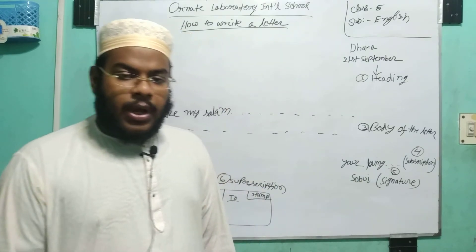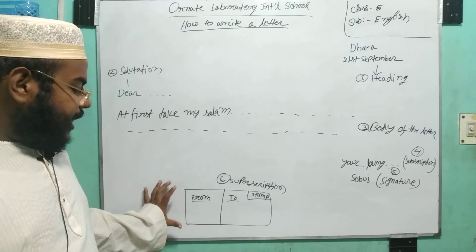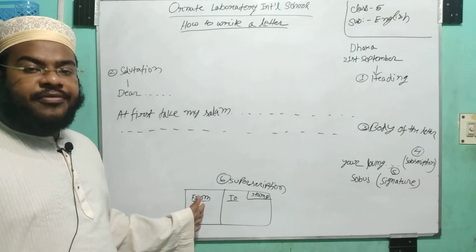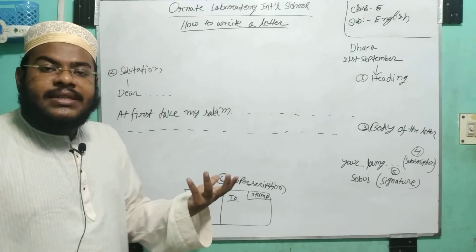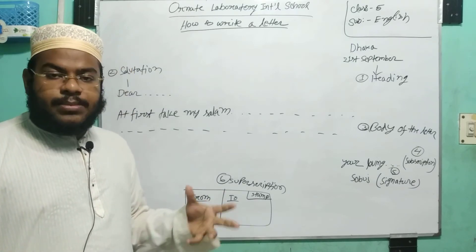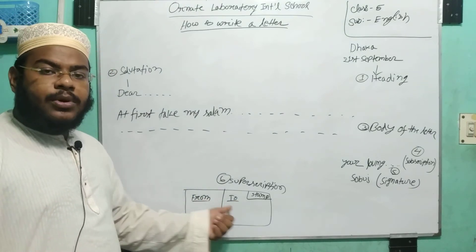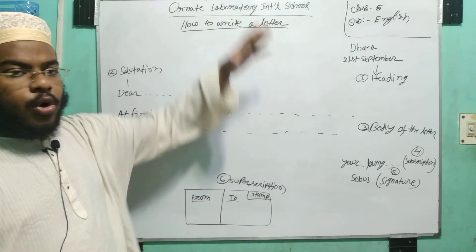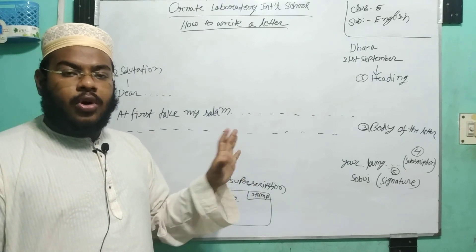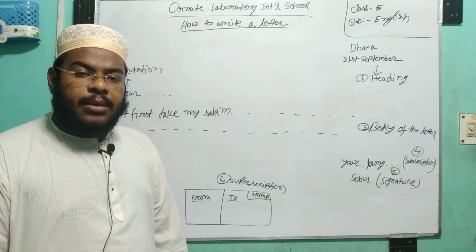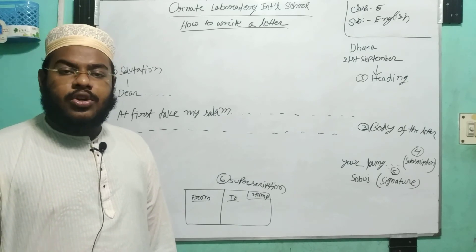তোমার স্নেহের পুত্র — এই Subscription-এর নিচে যিনি চিঠি লেখেন তার নাম লিখতে হবে। এটা হচ্ছে Signature। এখানে আমাদের পোস্টাল অ্যাড্রেস এবং চিঠির সারবো শেষে গুরুত্বপূর্ণ নাম্বার দিতে হয়। এটা তোমাদের Syllabus-এর মধ্যে যা আছে, এটা Moral Question — কোরো ধরো সেই Question আমাদের Comment Box-এ জানাবে।